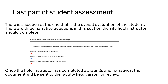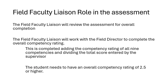The field faculty liaisons highly recommend that this document is also reviewed with the student during discussion. This document should mimic the process that a social worker may obtain during an employment performance review — it should allow them to have feedback, understand the feedback, question the feedback, and work on goals to help them either achieve a higher rating or understand what progress needs to be made. Once fully submitted, the field faculty liaison or instructor will review the assessment for overall completion and work with the field faculty director to complete an overall competency rating. This is completed by adding the competency ratings of all nine competencies and dividing the total score accordingly. The student needs to have an overall competency rating of 2.5 or higher for their midterm assessment.